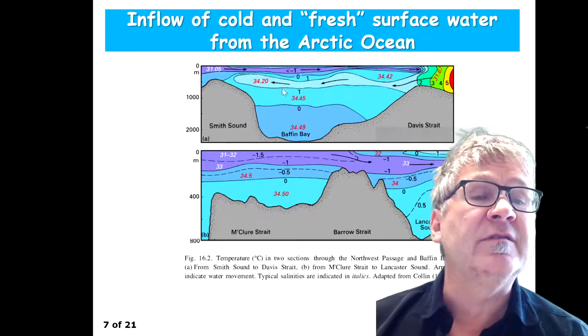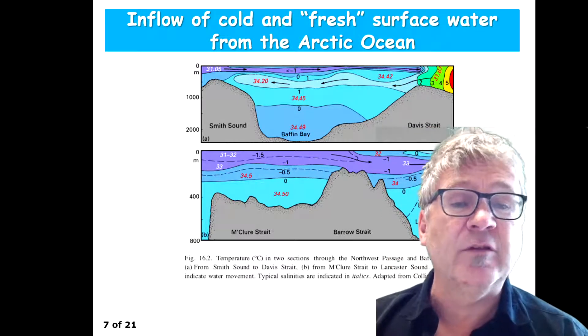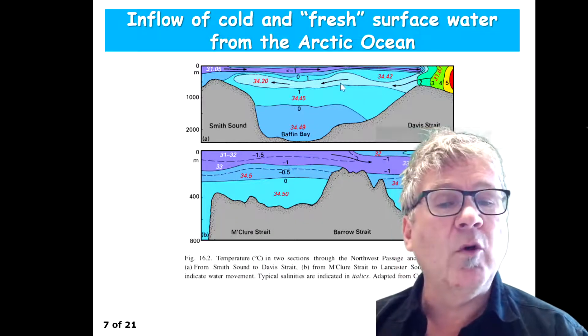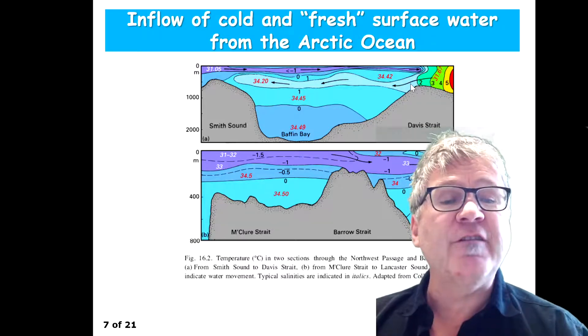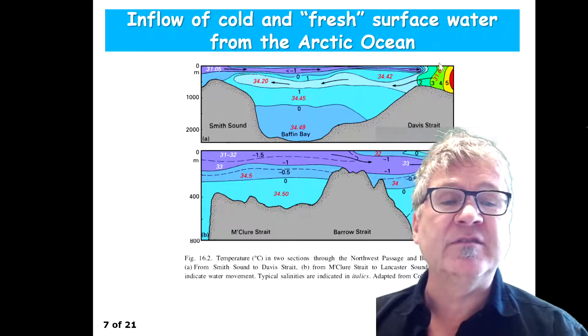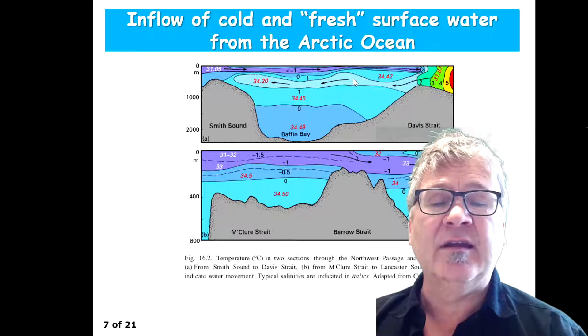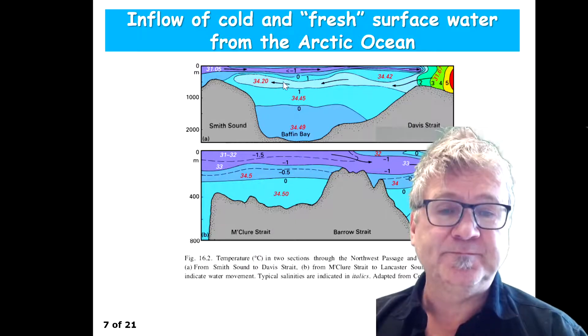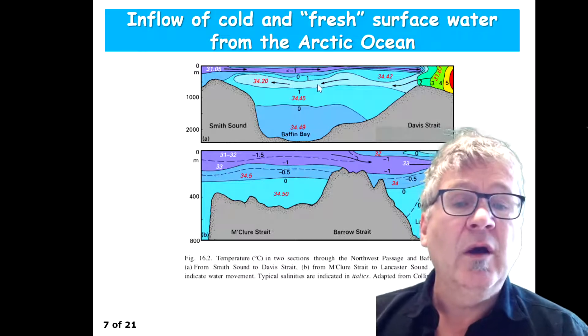But in this example, you can see that there is a subsurface flow coming of a little bit warmer water, which spreads at a depth of 500 meters, comes from Davis Strait and spreads into that area at that depth.